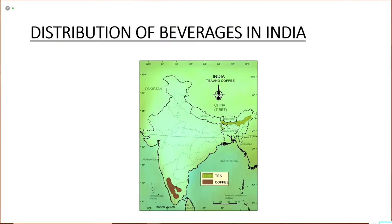Looking at the map, the eastern part of India grows tea, whereas the southern part — Kerala, Karnataka and Tamil Nadu — are the major coffee producers.